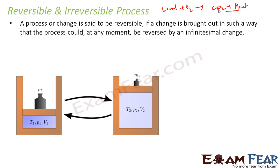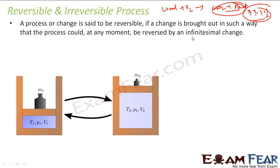You can't reverse burning — you can't recreate wood from carbon dioxide and heat. Almost 99.9% of natural processes are, in fact, irreversible. Reversible processes are a concept done only in labs, with a lot of precautions, in very small incremental changes.